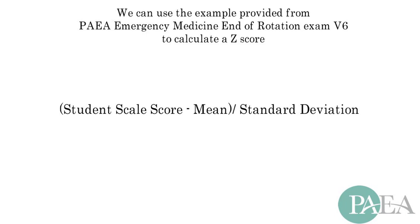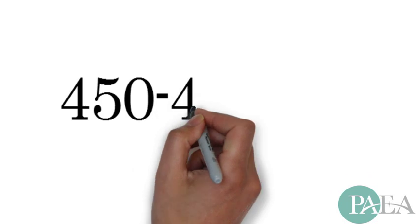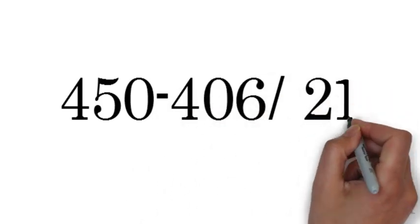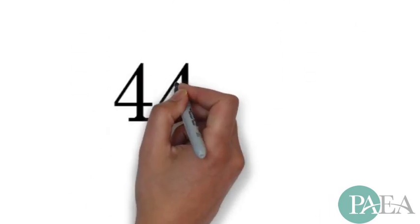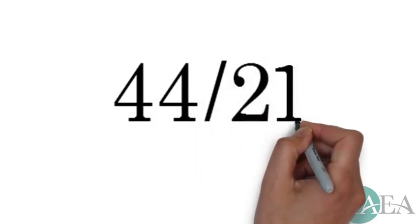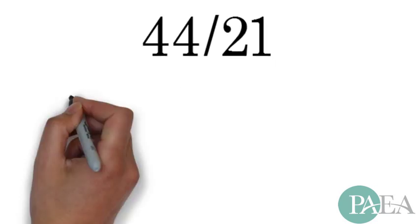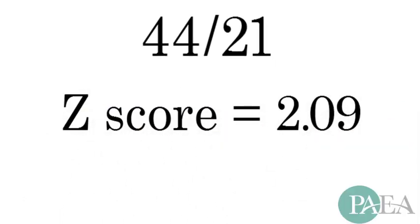So now let's put these numbers into practice. You have 450 minus 406 divided by 21. This will give you 44 divided by 21. The student has a Z-score of 2.09, which is a little over two standard deviations from the mean.